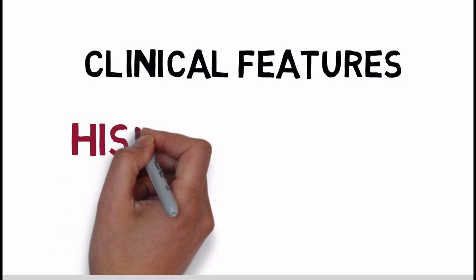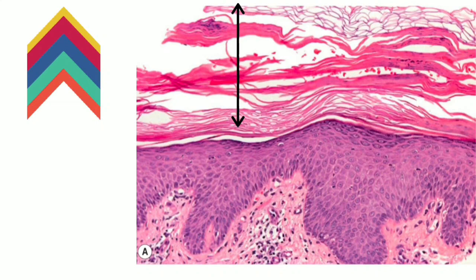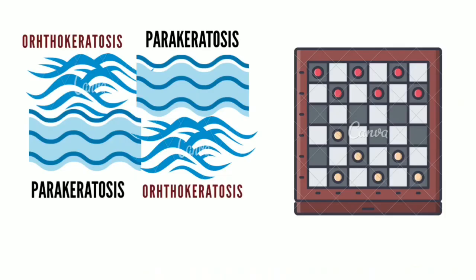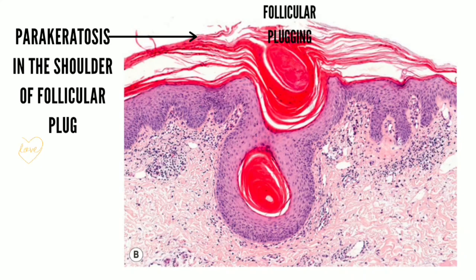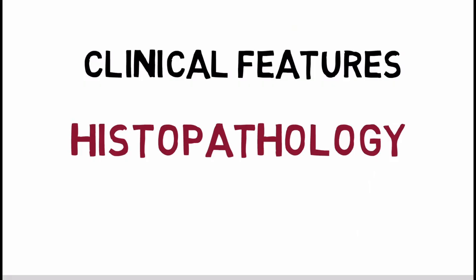The diagnosis of Pityriasis Rubra Pilaris is based on clinical features and histopathology. On histopathology, there is increased thickness of the stratum corneum — hyperkeratinization — resembling psoriasiform hyperplasia. There is alternating vertical and horizontal ortho- and parakeratosis, giving rise to a checkerboard appearance. There is also follicular plugging, where the hair follicles are dilated and filled with a keratinous plug. The shoulder of the stratum corneum surrounding the follicular opening frequently shows parakeratosis.